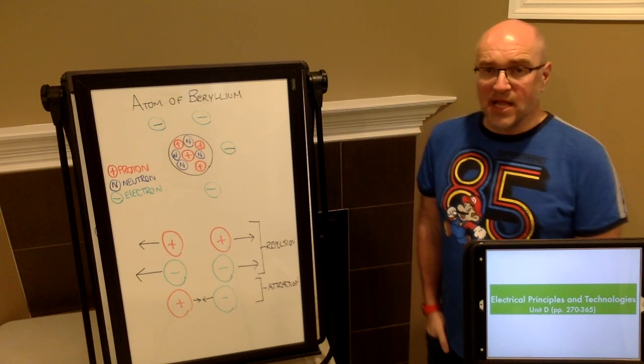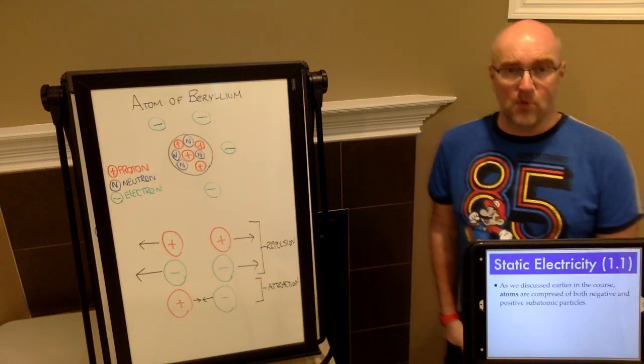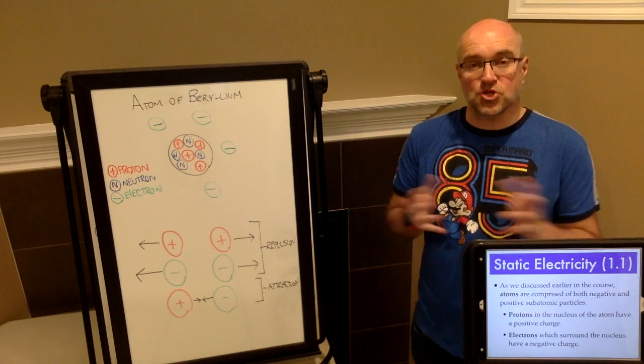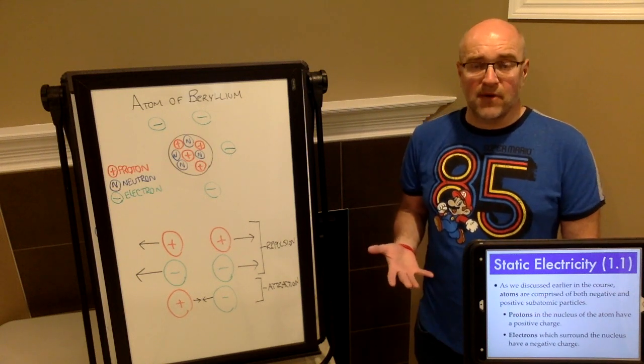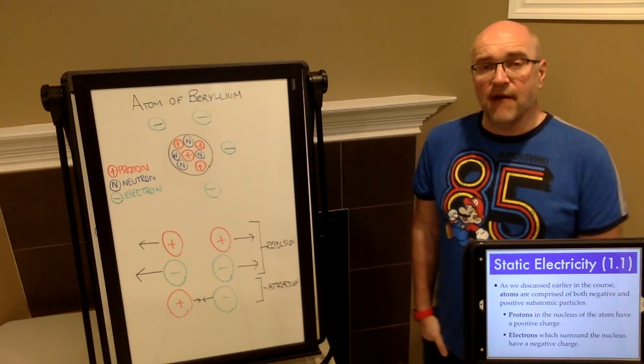Hey Green Nines and welcome to Unit D Electrical Principles and Technologies. Today we're going to start off with topic 1.1 which is about static electricity. How does an electrical charge actually form? In order to discuss that, we've got to look back to Unit B where we discussed the structure of the atom.